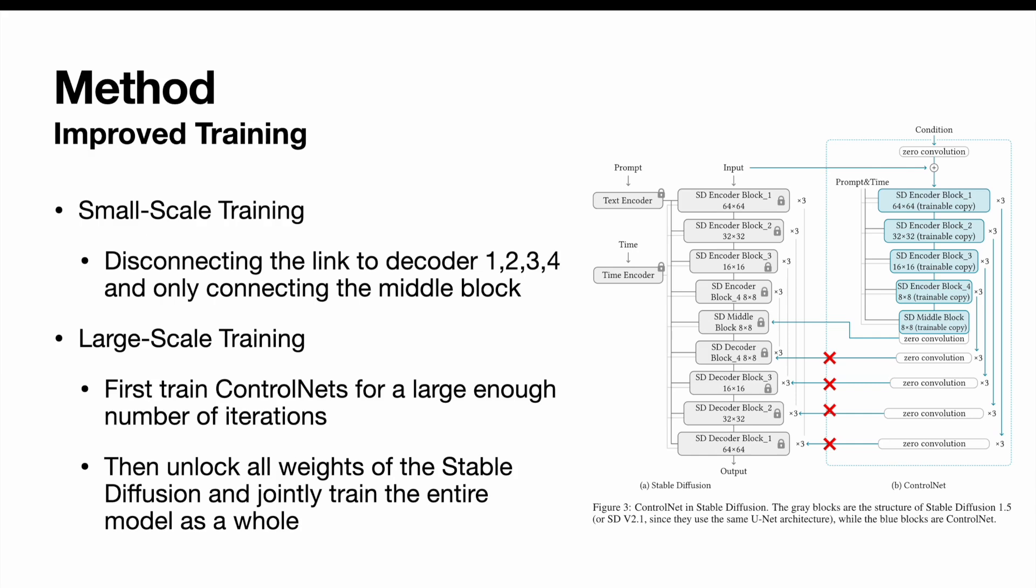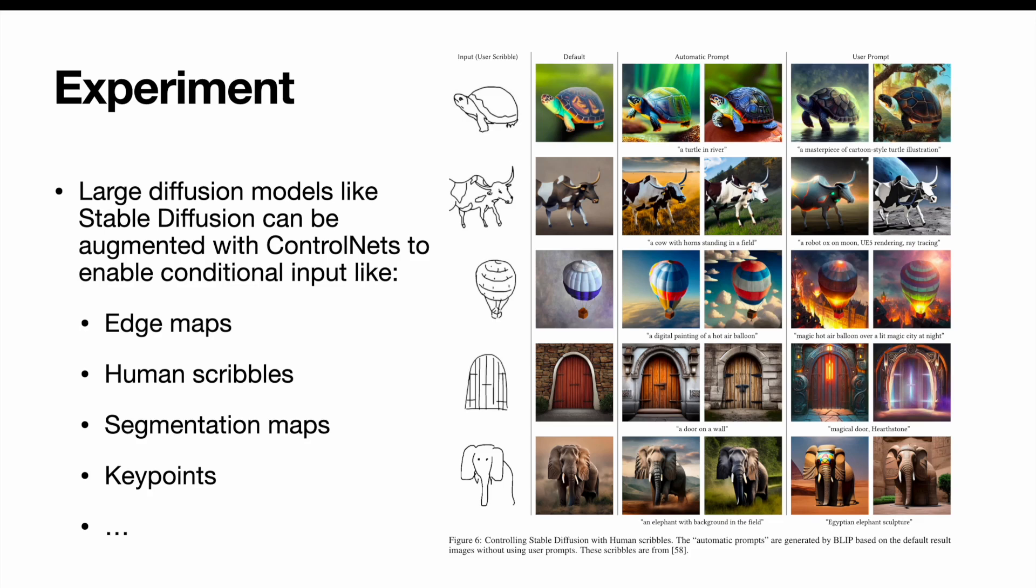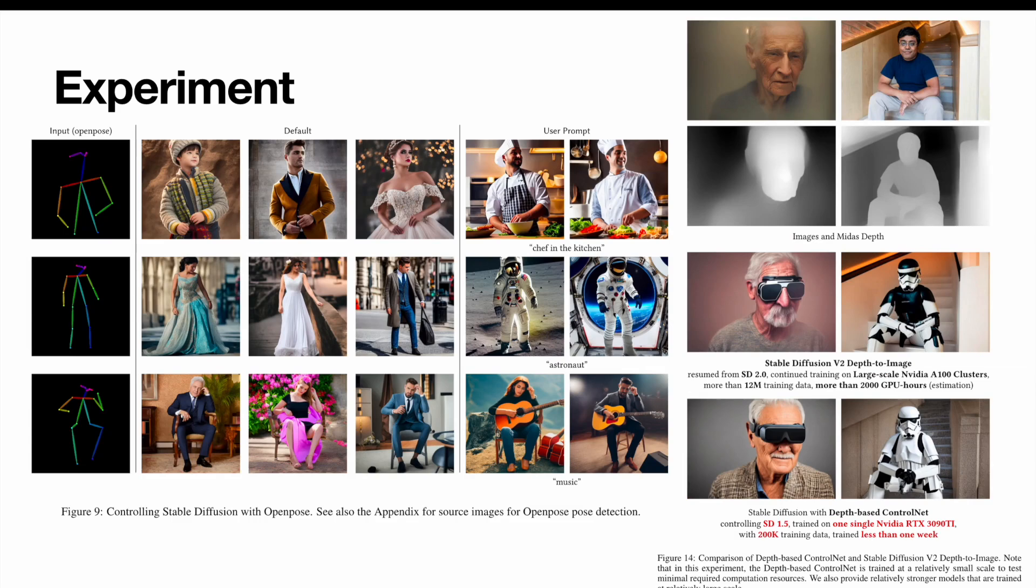Large diffusion models like stable diffusion can be augmented with ControlNets to enable various conditional inputs. The author showed a lot of examples in the experiment section. Here, I only present some of them. For example, controlling stable diffusion with human scribbles. Controlling stable diffusion with open pose. The author also did a comparison of depth-based ControlNet to Stable Diffusion version 2 depth-to-image model.